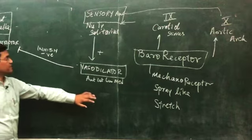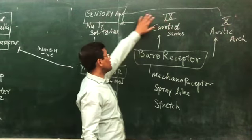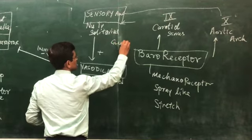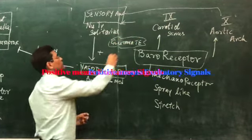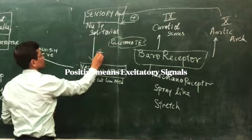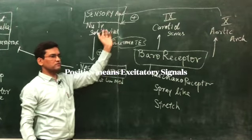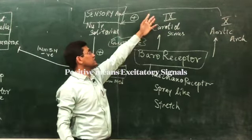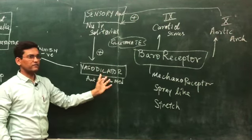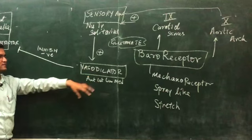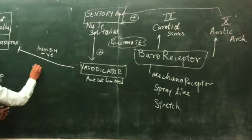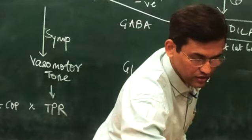This process is controlled by specific neurotransmitters. The signals from the baroreceptors to the nucleus tractus solitarius and to the vasodilator area are all positive, excitatory signals using glutamate. The vasodilator center then creates a negative inhibitory impulse using GABA, which inhibits the vasoconstrictor area.